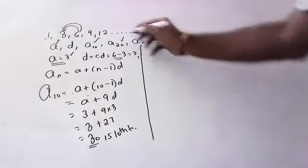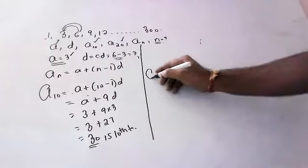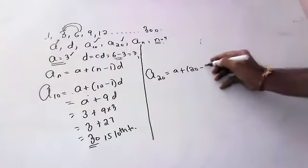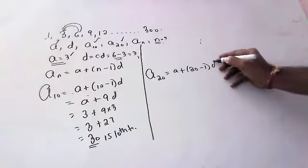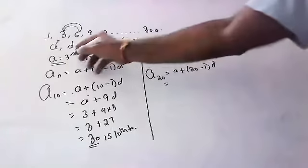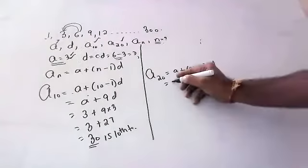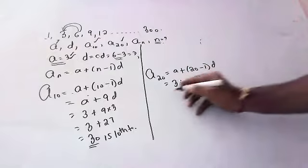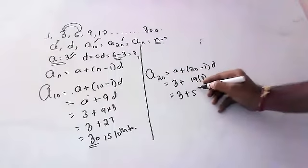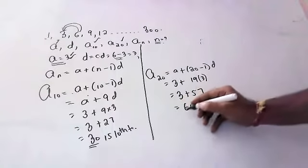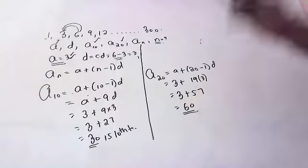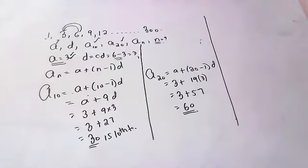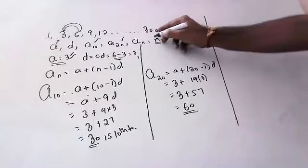For the 20th term, same procedure: a + (20−1) × d = a + 19d. a is 3, plus 19 × 3 = 3 + 57 = 60. So 60 is the 20th term.